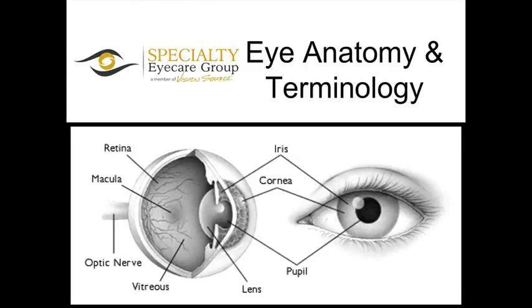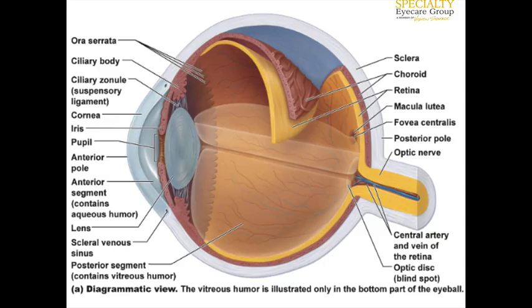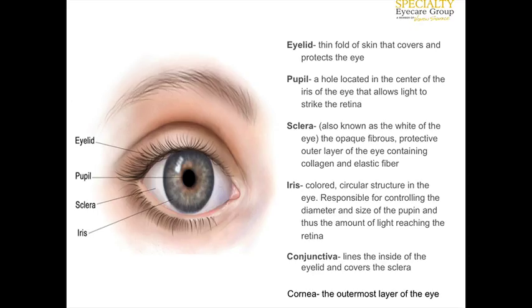This video is going to be focusing on eye anatomy and terminology. It should complement some paperwork that you would have in a training manual. The eye is a very complex structure — there are a lot of parts and a lot going on in the eyeball. Throughout this presentation and through other training and your experience within our office, you'll get to learn more about these parts of the eye.